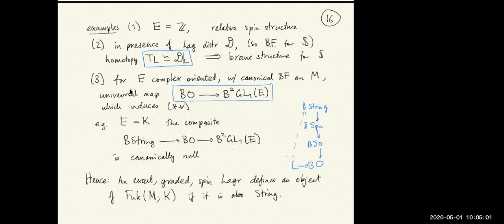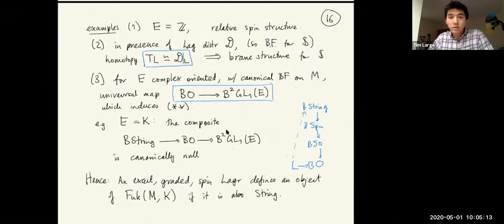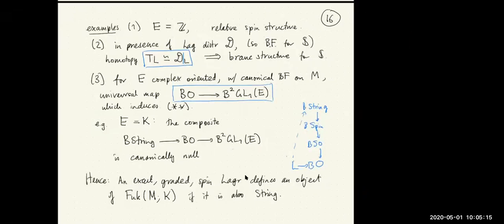Thank you very much, Tim. We'll enter the Q and A period now. There's another question from Danny: if you have a Lagrangian in a cotangent bundle and a generating family that gives a null homotopy of the stable Gauss map, which would allow you to have Floer K-theory, would that be readable in terms of Morse-theoretic information of the generating function?